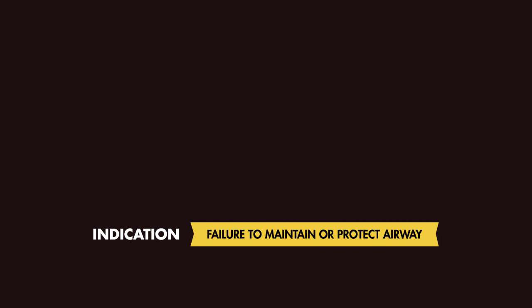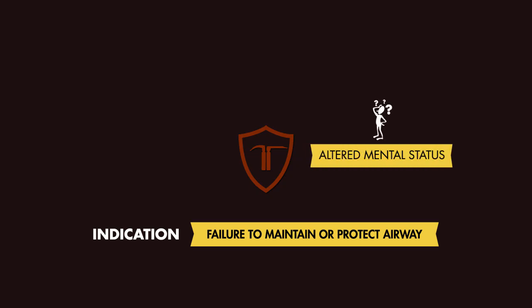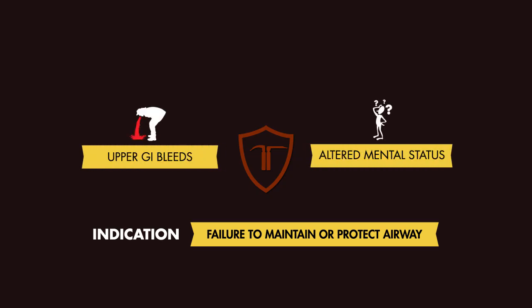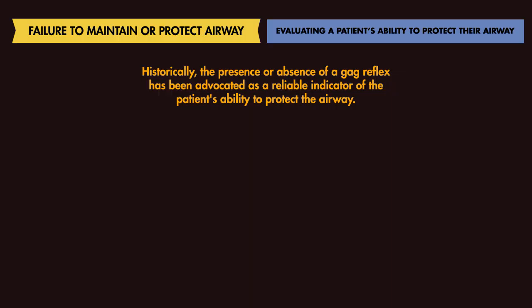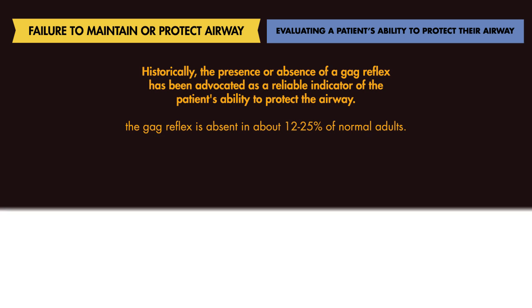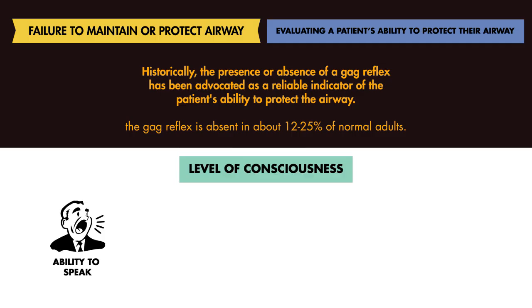An indication for RSI includes patients who fail to maintain or protect their airway or are at high risk for aspiration — for example, patients with altered mental status and those with upper GI bleeds. Historically, the presence or absence of a gag reflex has been advocated as a reliable indicator of the patient's ability to protect their airway. But the gag reflex is absent in about 12–25% of normal adults. A better way to evaluate a person's ability to maintain and protect their airway is to evaluate the patient's level of consciousness and their ability to speak to you.